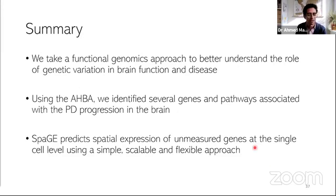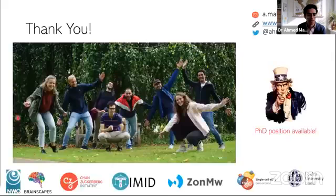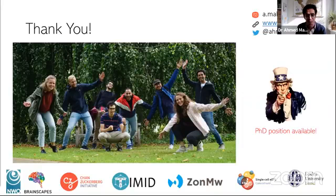So that's the end of my presentation. The take-home messages are: we take a functional genomics approach to understand the role of genetic variants in brain disease and brain function. I showed you an example based on the Allen Human Brain Atlas, identifying genes and pathways correlated with the progression pattern of Parkinson's disease. Moving into single-cell and spatial transcriptomics, there are many technical and methodological challenges, and I showed you SPAGE, a method we developed to tackle how to integrate spatial and single-cell data. We do have an opening for a PhD position in the lab — please let anyone interested know.